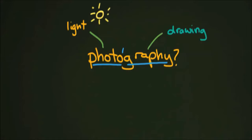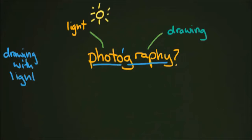Light not in the sense of heavy or light, but light in the sense of the sun — what you see with your eye. And 'graphy' sort of means something along the lines of drawing. So when you put those two things together, you come up with 'drawing with light,' which I think is a really great way of describing what photography is.